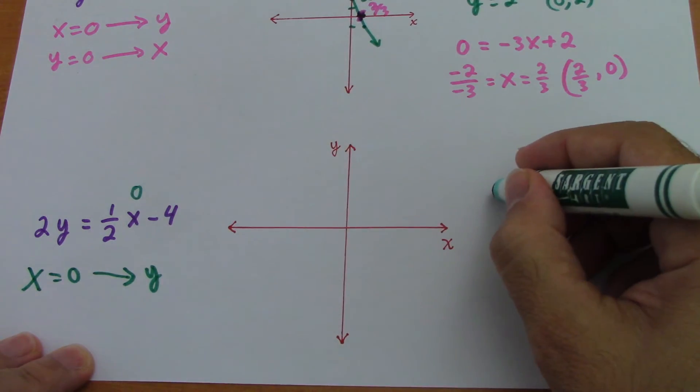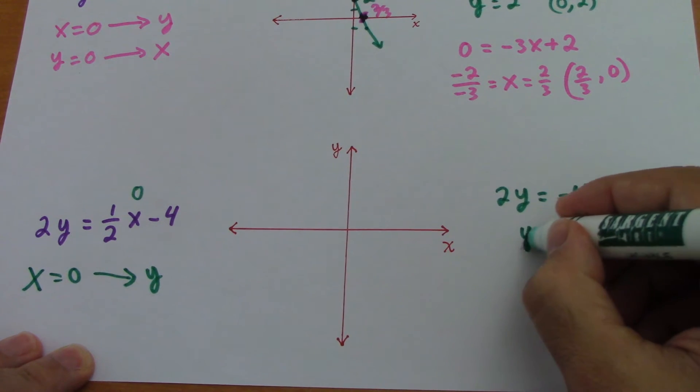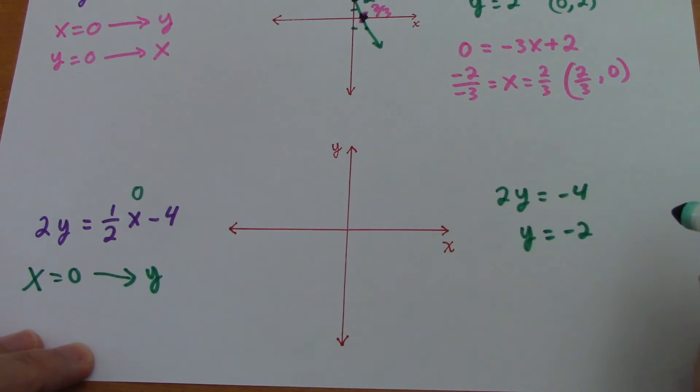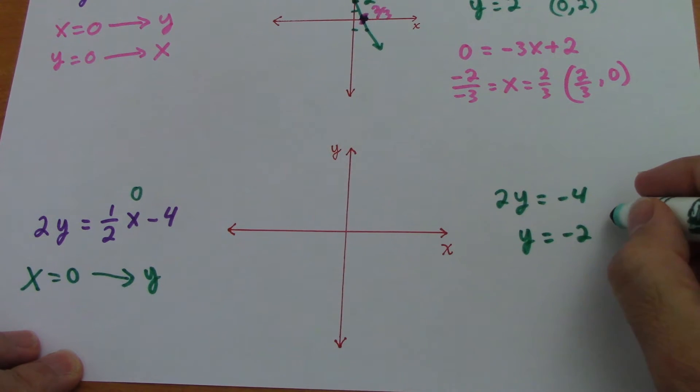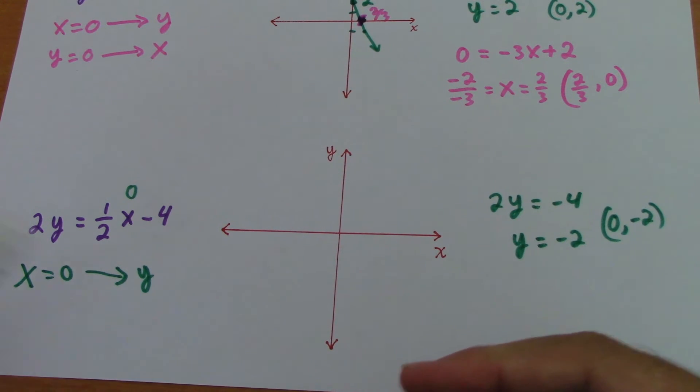If we have 2y equals negative 4, y is equal negative 2. So the point would be 0 comma negative 2. We have already the point. Then we're going to graph. In this case, we're going to do the graphing first.